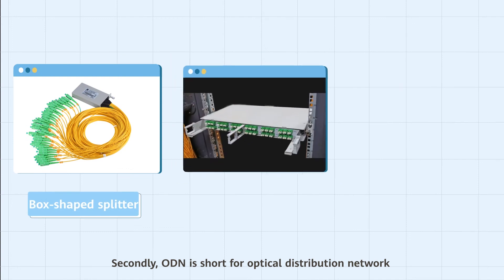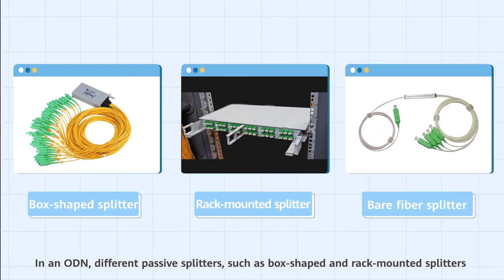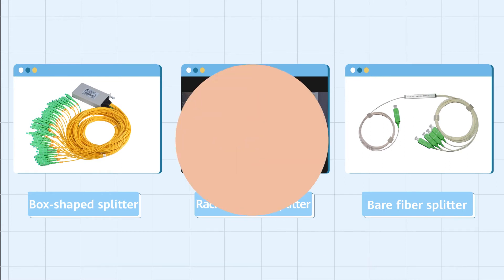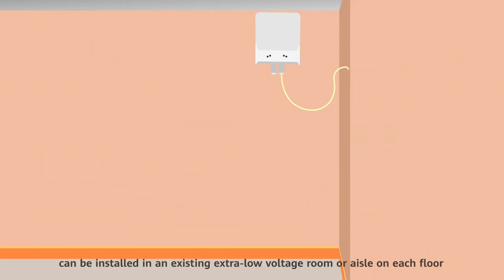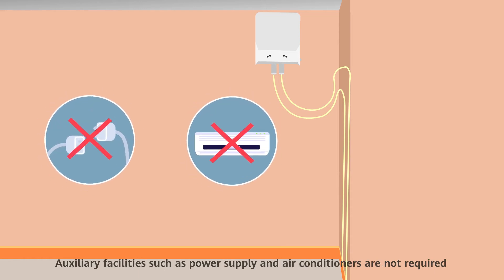Secondly, ODN is short for Optical Distribution Network. In an ODN, different passive splitters, such as box-shaped and rack-mounted splitters, can be installed in an existing extra-low voltage room or aisle on each floor. Auxiliary facilities such as power supply and air conditioners are not required.